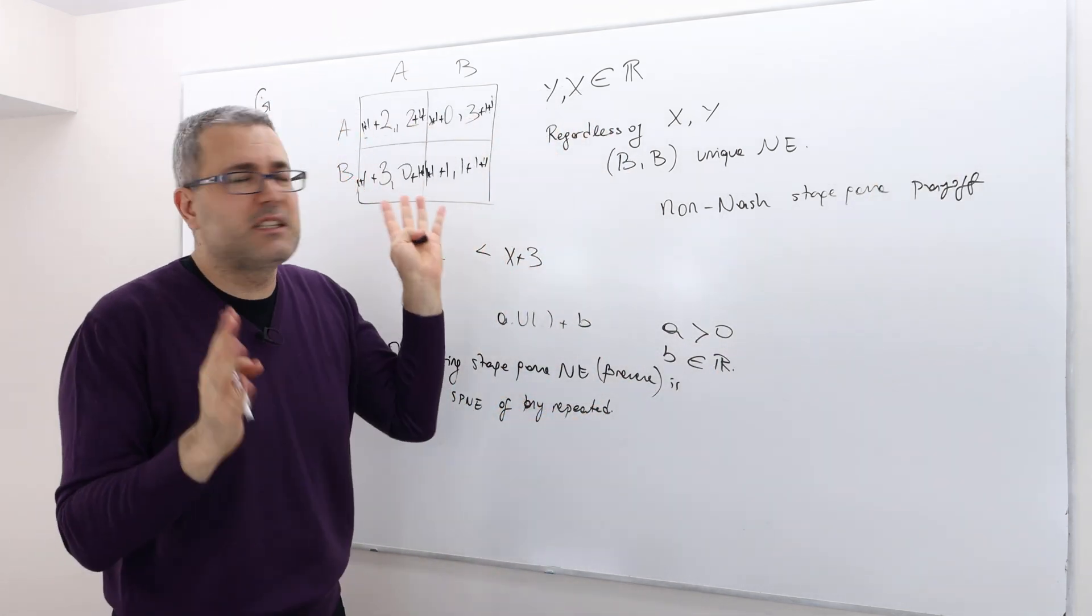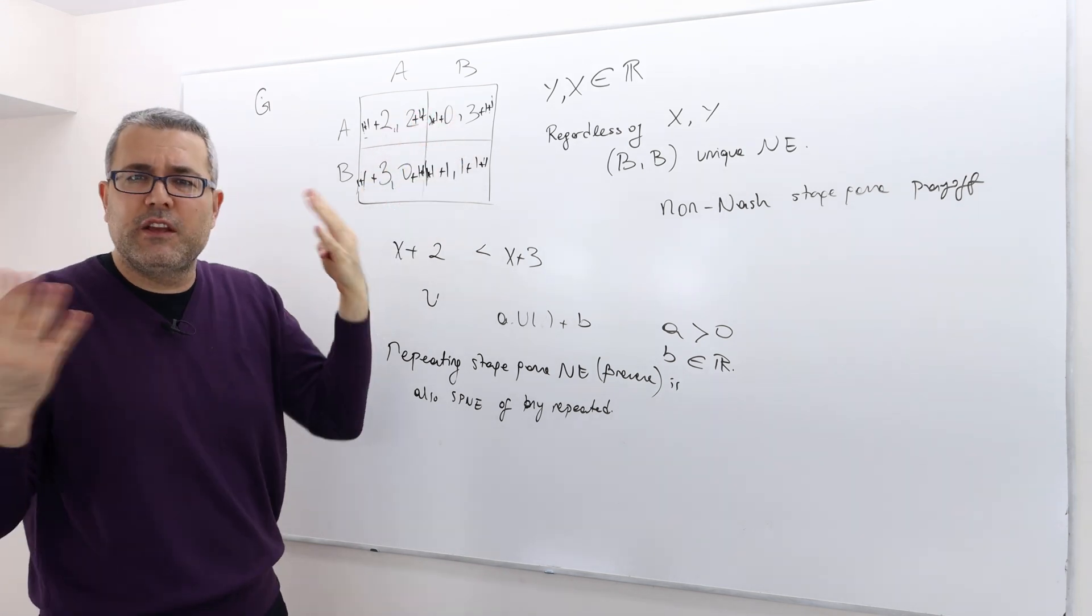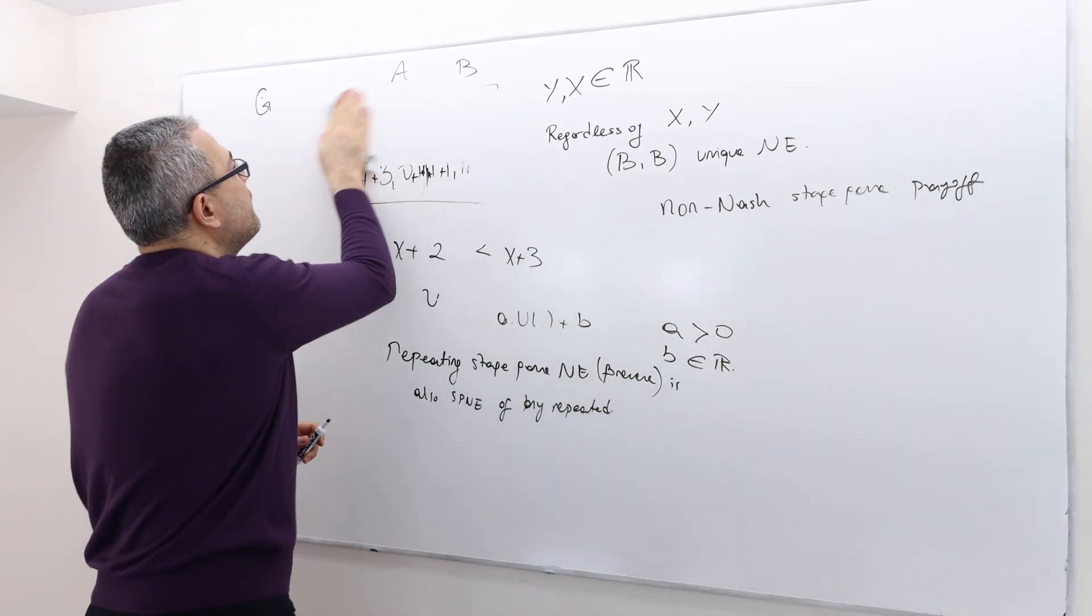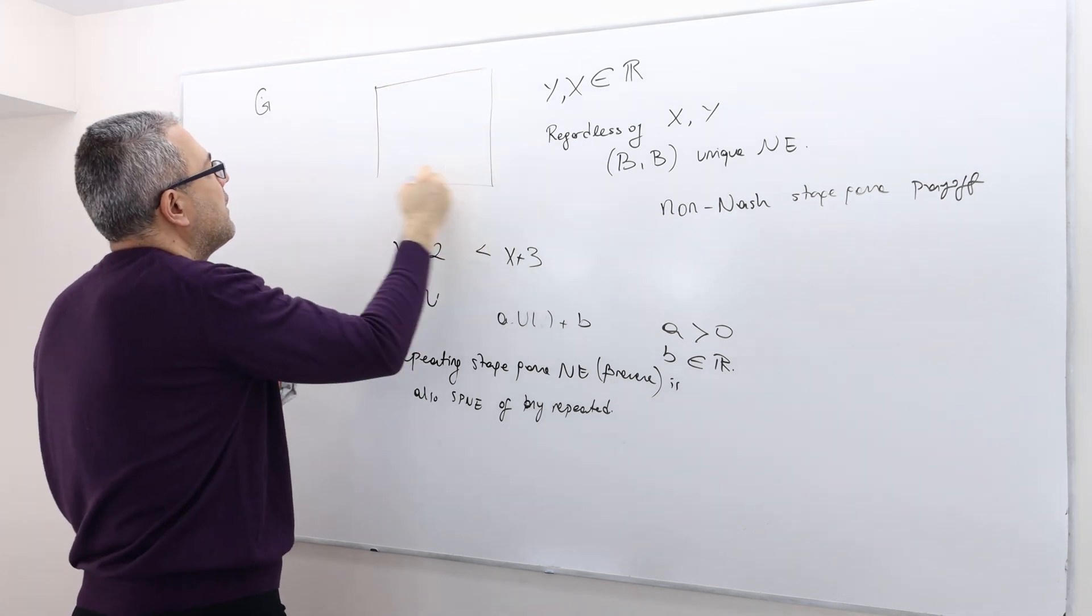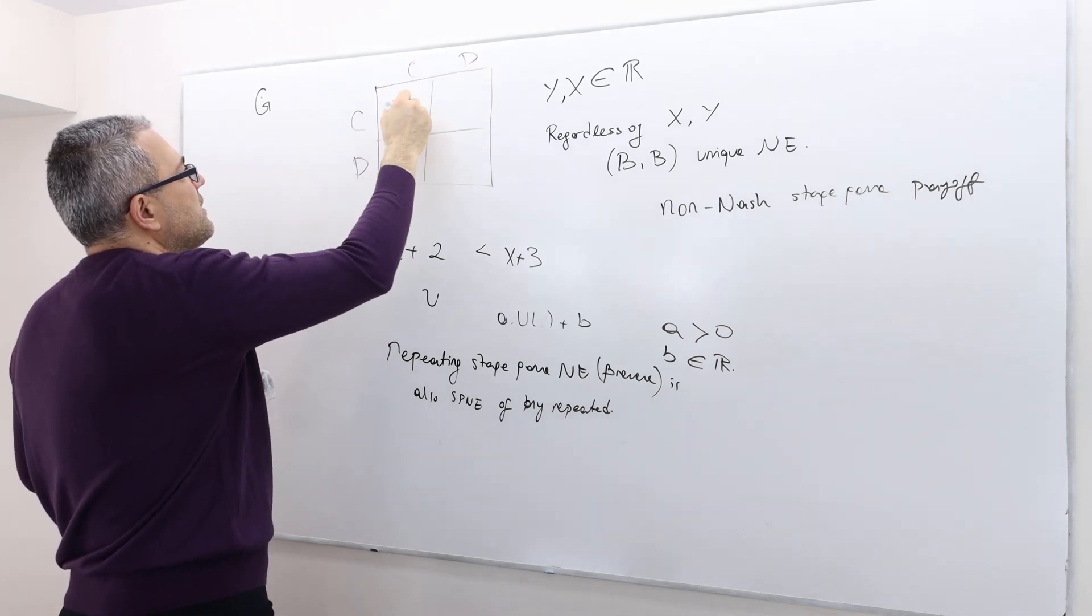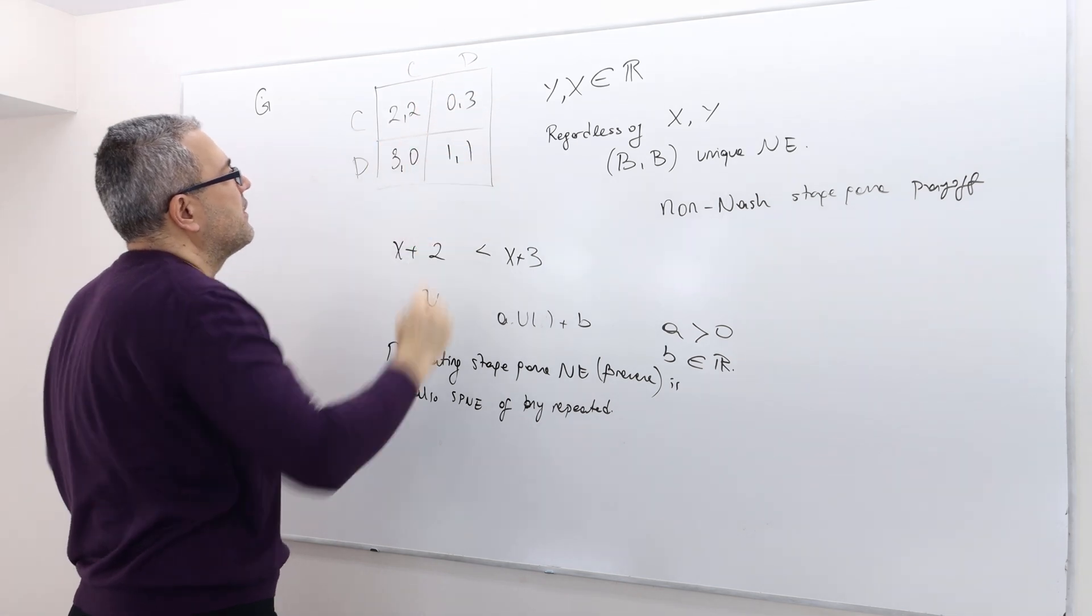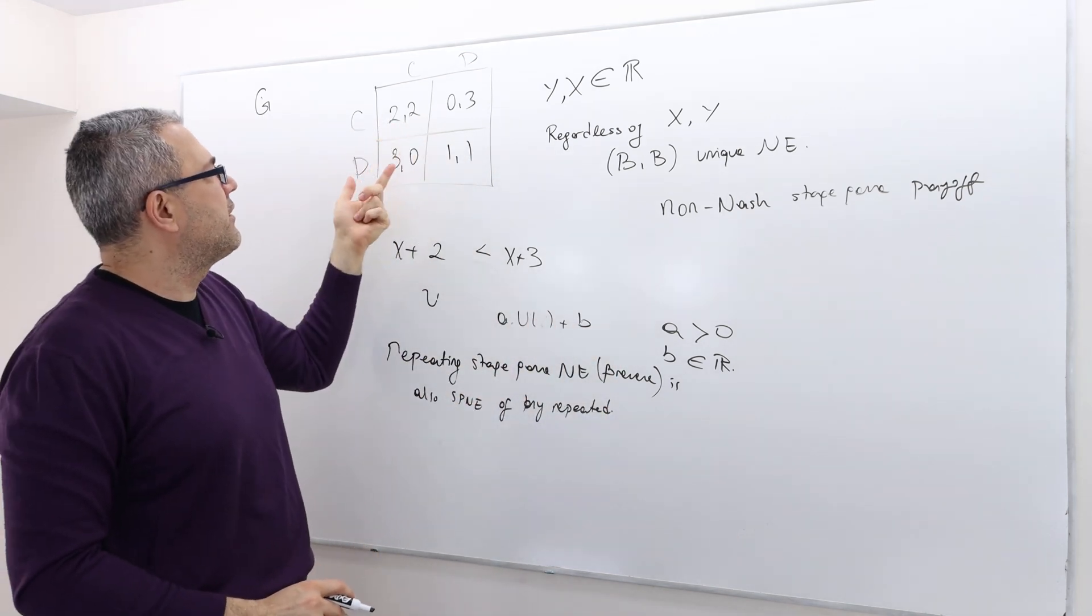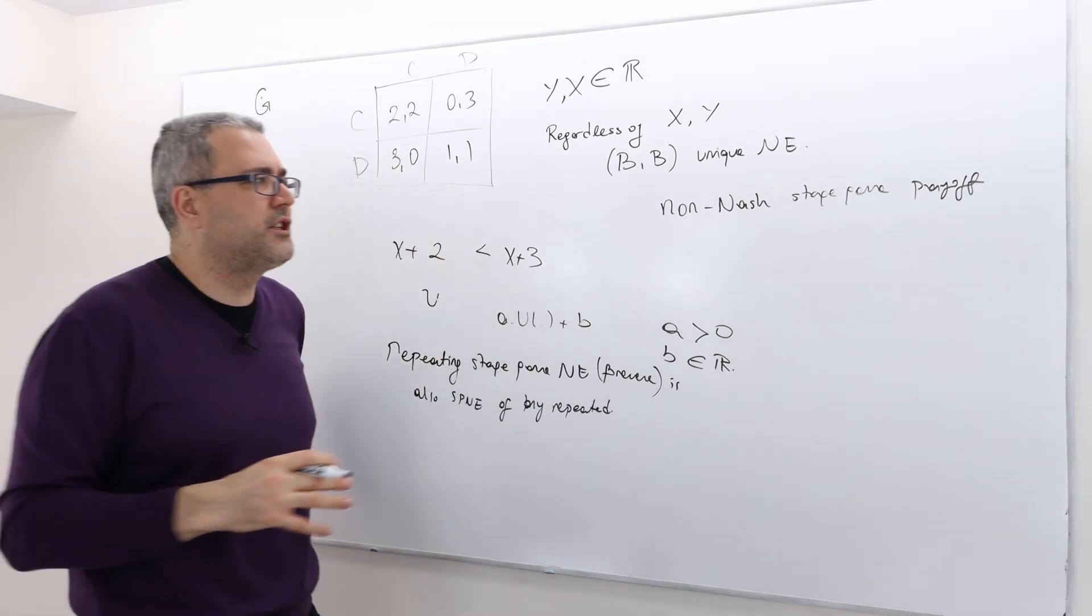For example, in the Prisoner's Dilemma, the 2-2 is a non-Nash payoff. Let's call it C-D-C-D because this is the standard name of the strategy in Prisoner's Dilemma. The non-Nash stage game payoffs are 2-2, 0-3, 3-0. Every feasible payoff other than 1-1 is a non-Nash stage game payoff.